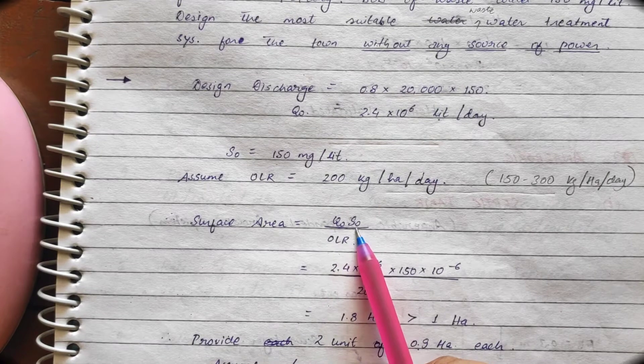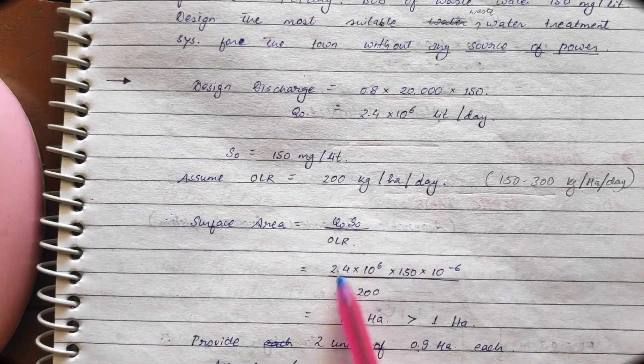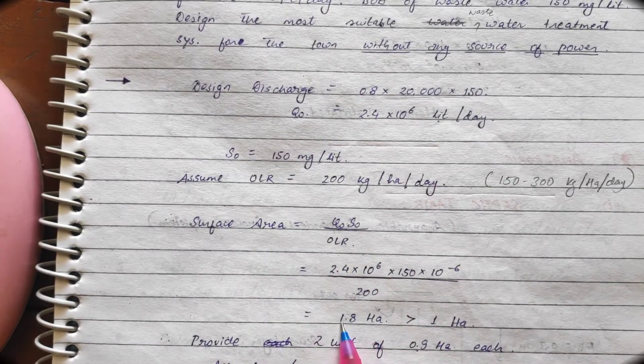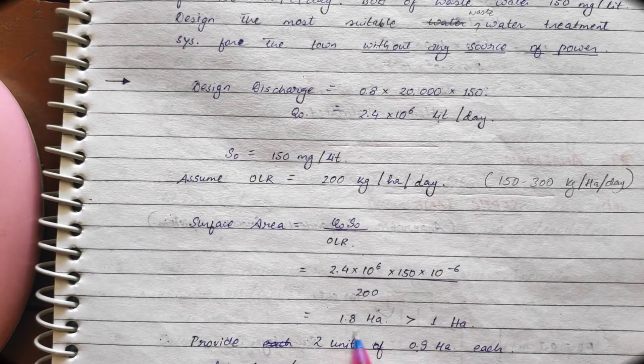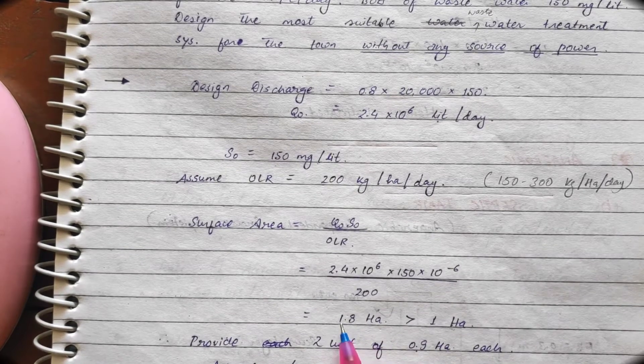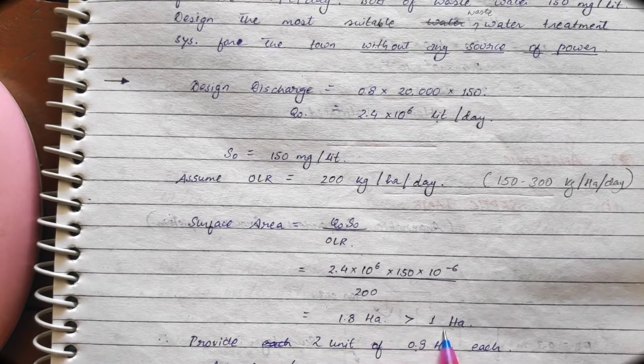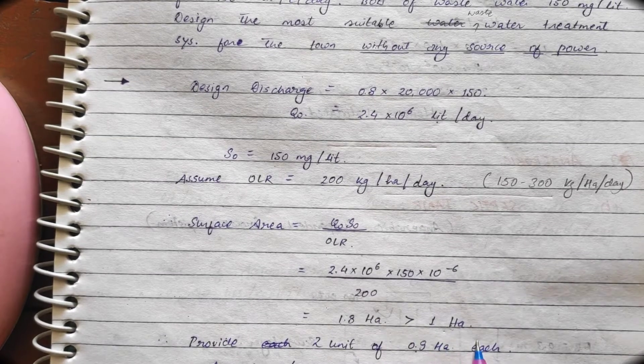Now, Q0, S0 and OLR is given. So, from here we can calculate the surface area. Surface area comes out to be 1.8 hectare which is greater than 1 hectare which satisfy the condition.